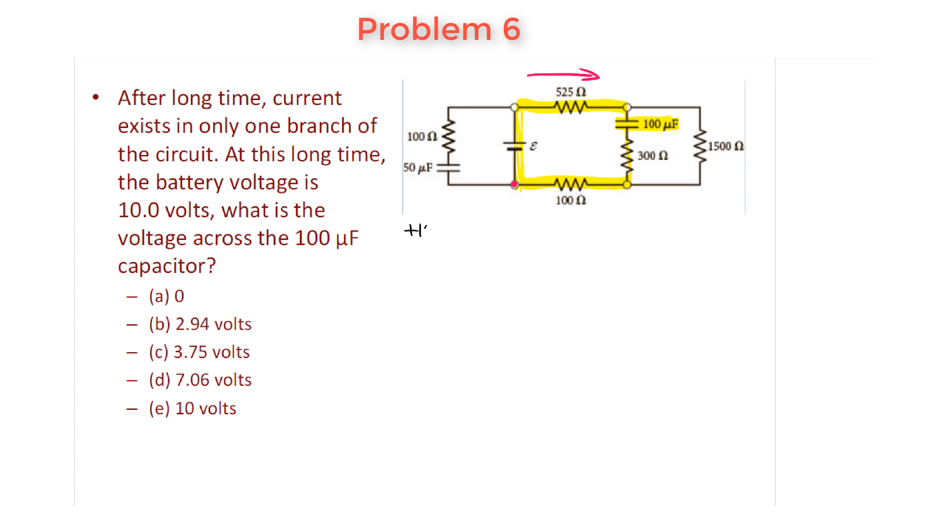The first thing I cross is a 10 volt battery, that means I add plus 10. Then the next thing I cross is a 525 ohm resistor, so there's going to be a voltage drop across that and the voltage drop is given by Ohm's law - it's the value of the resistance 525 multiplied by the current flowing through it. Next thing I encounter is the capacitor, that's going to be the voltage across the 100 microfarad capacitor.